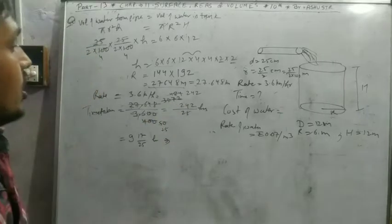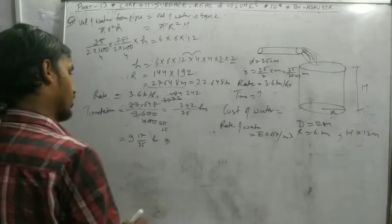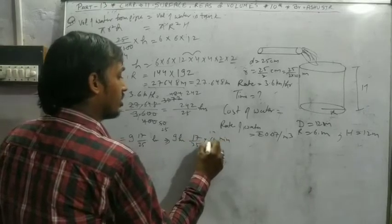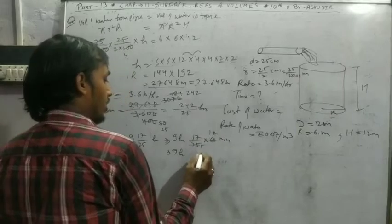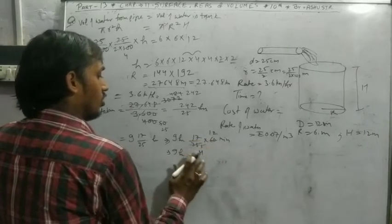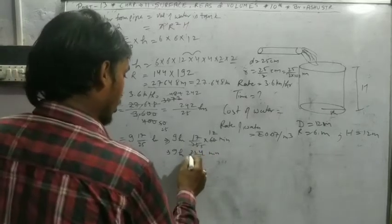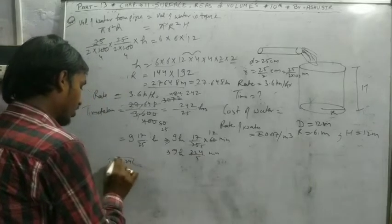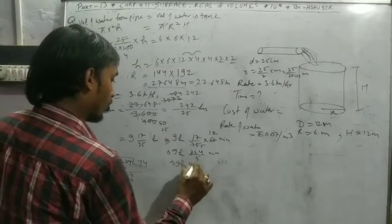So 42 minus 25 leaves remainder 7, giving 9 hours plus 17 by 25 times 60 minutes. 5 goes into 12, that's 22 by 5 minutes, which equals 4 minutes. So 25 times 4 is 20, giving us 9 hours 44 minutes.